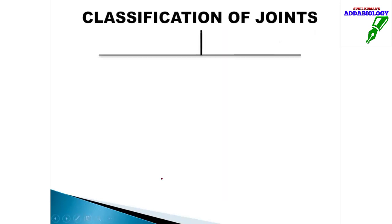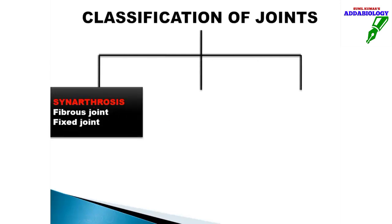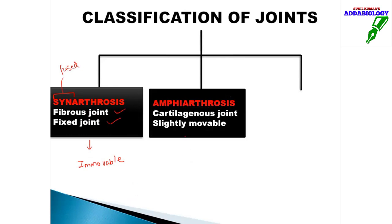When it comes to classification of joints, there are three types. The first is synarthrosis, also called a fibrous joint or fixed joint, and even an immovable joint. It is immovable because it is fixed. The word 'syn' itself means fused, so here everything is fixed with no movement.